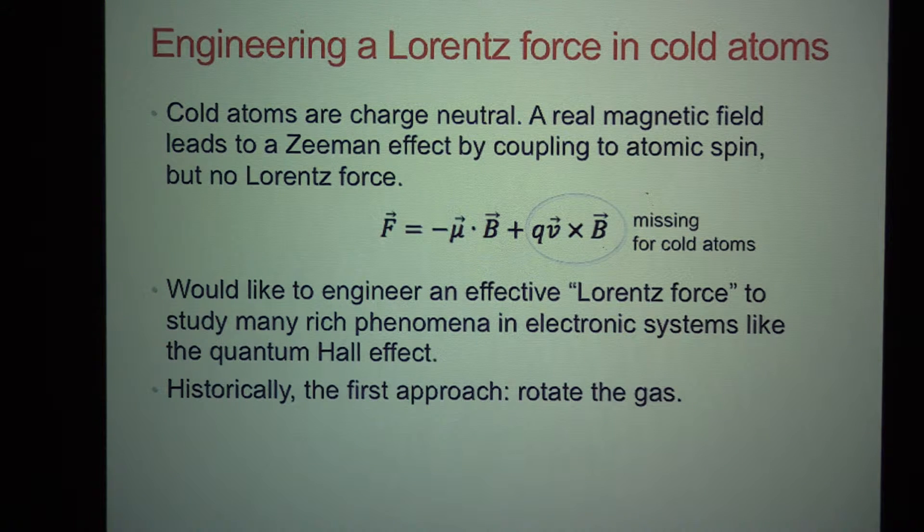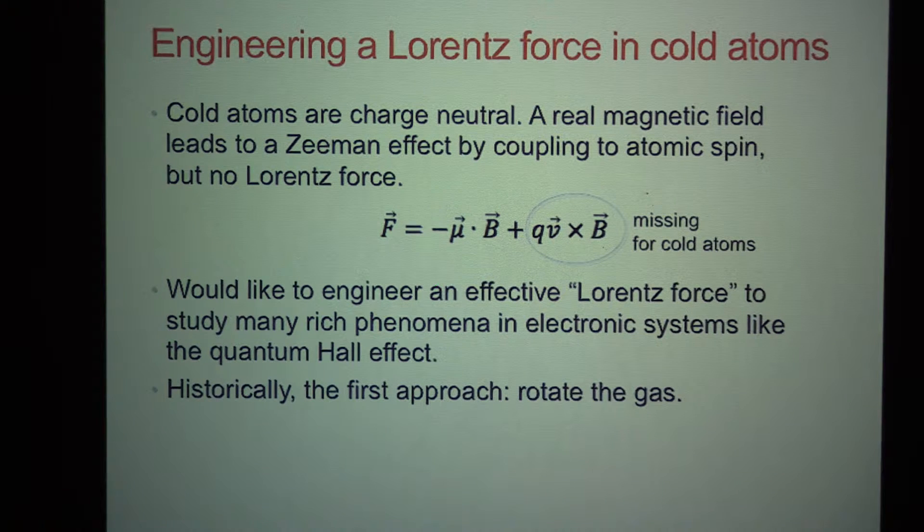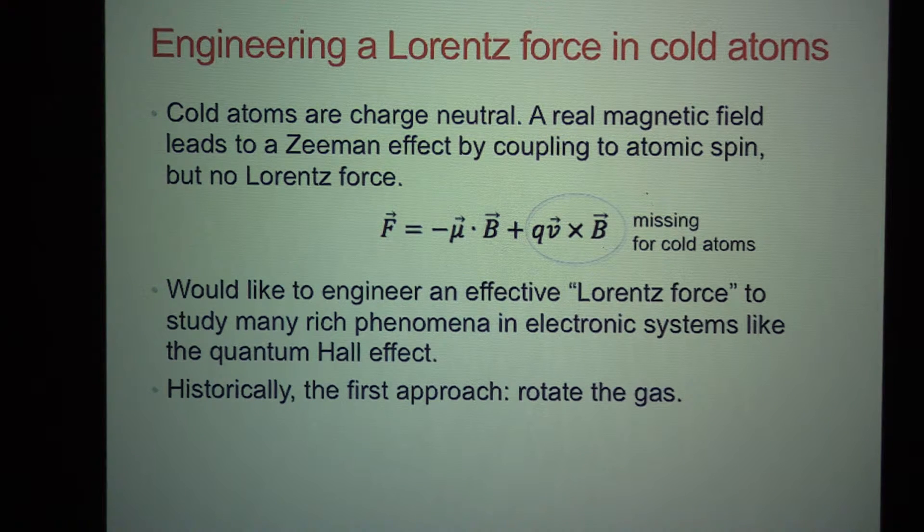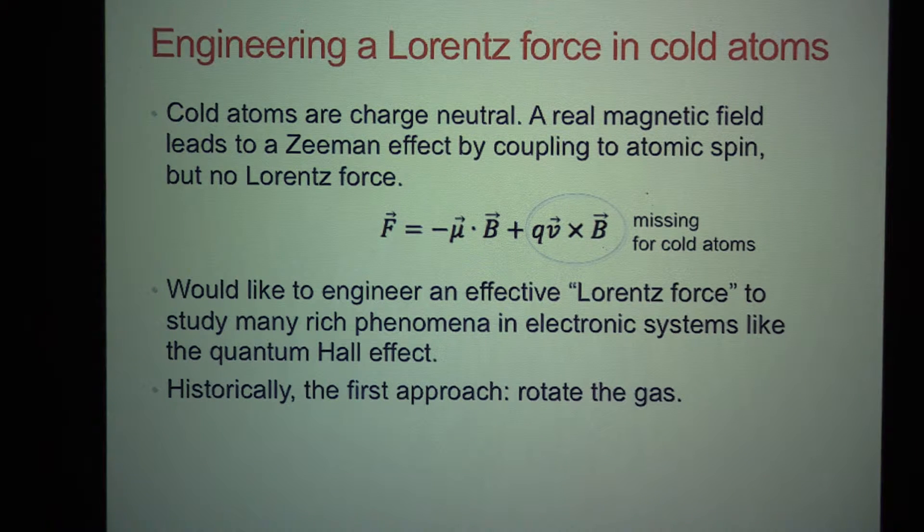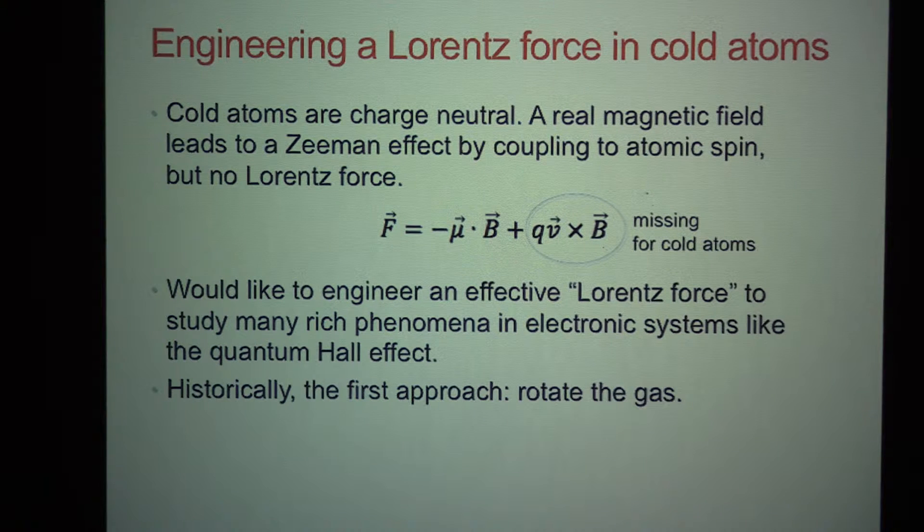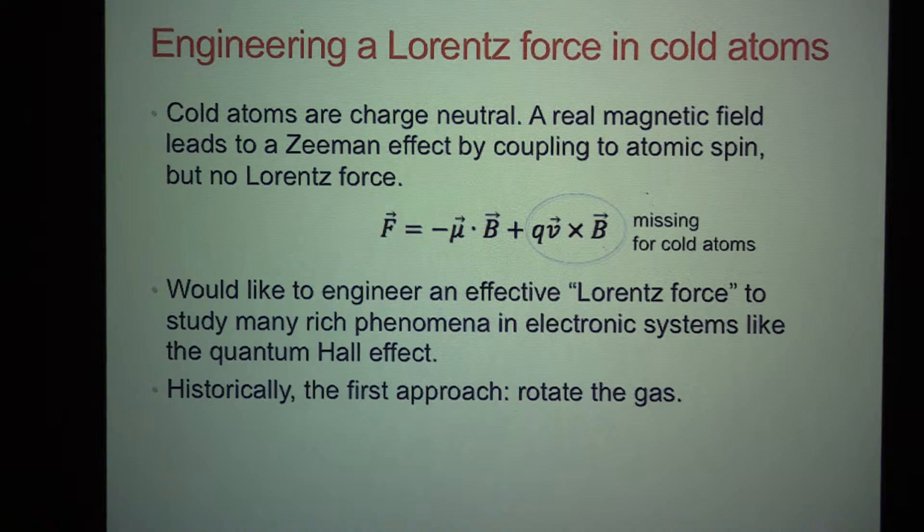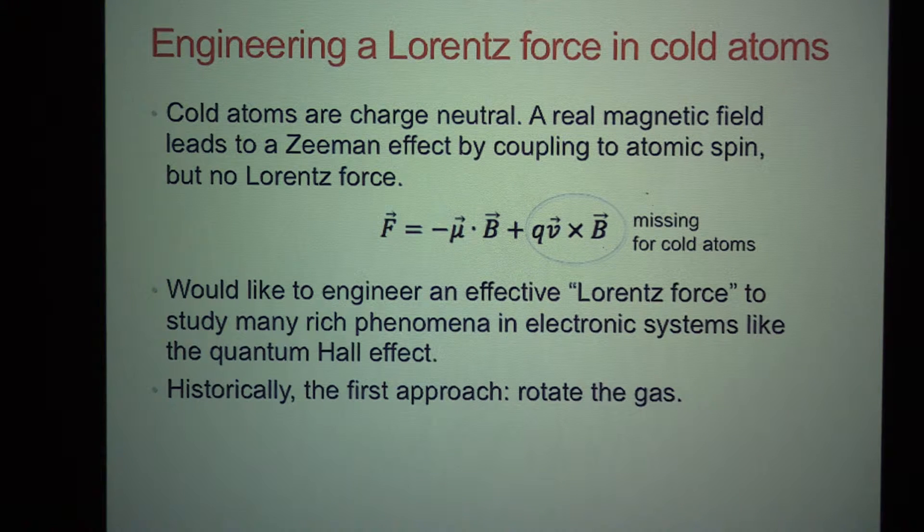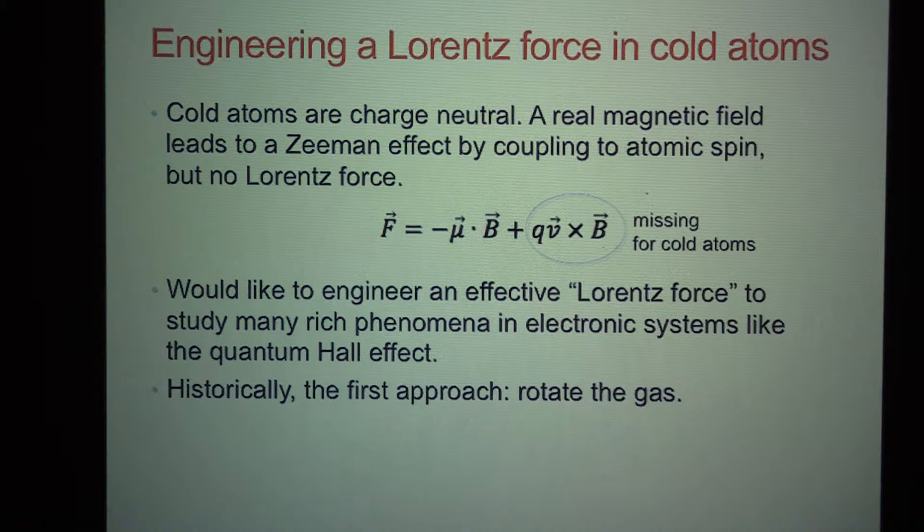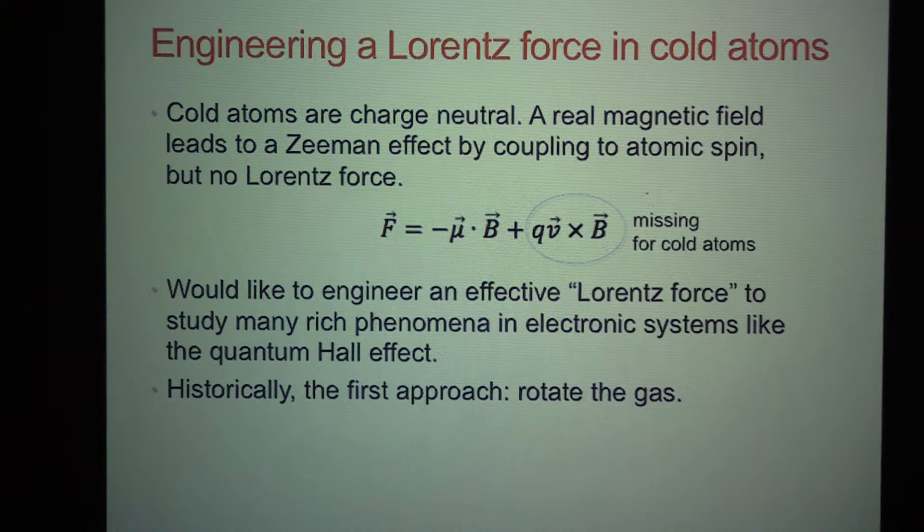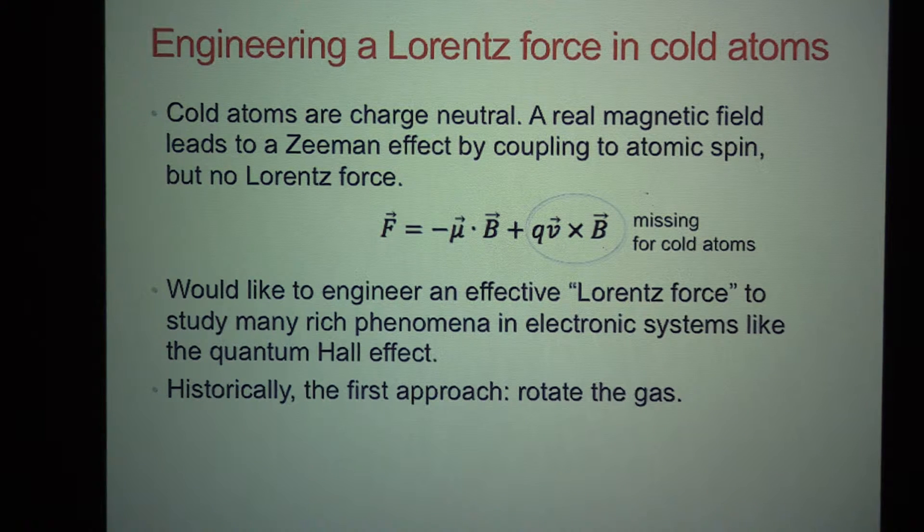If you add the magnetic field to the atoms, they do have a magnetic moment. Typically they have an unpaired electron in these alkalis, so they have a spin, and that spin can interact with the magnetic field, and that's what gave us the magnetic trapping. So you have this Zeeman shift that you have in electronic systems. But you don't have a Lorentz force because you don't have a charge for these atoms. So what a lot of people are trying to do is to somehow mimic the effect of Lorentz forces so that you can study a lot of the rich phenomena that you see in condensed matter, like fractional quantum Hall physics.